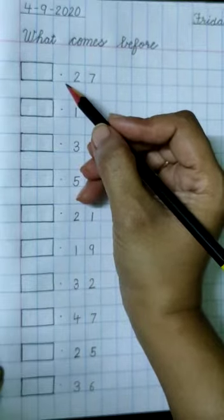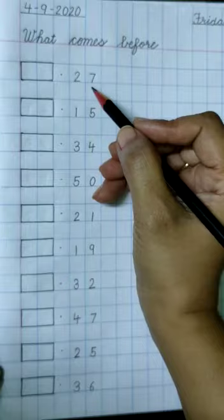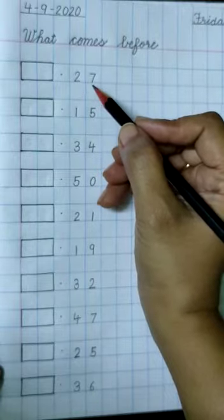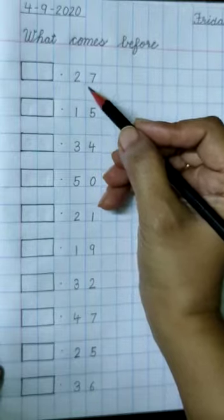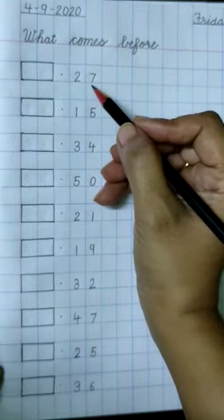Then put a dot here and write number 27 and use separate boxes to write numbers. Now what comes before 27? 26, 27. 26 comes before 27.